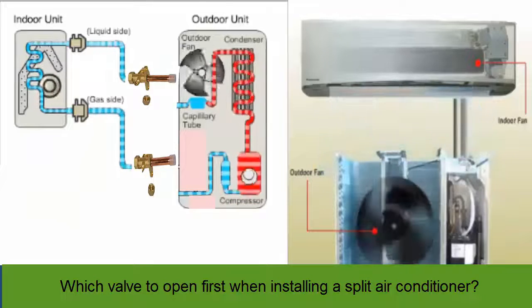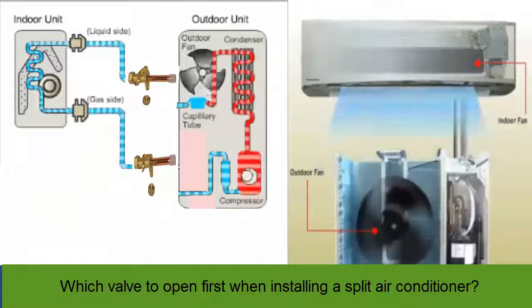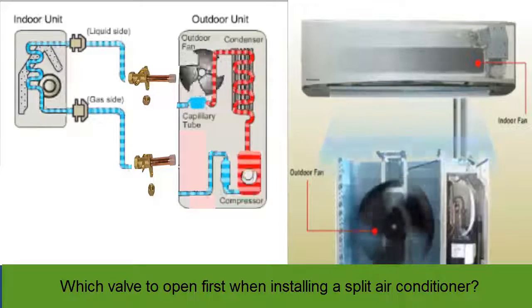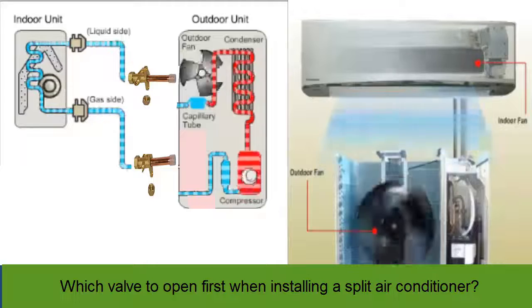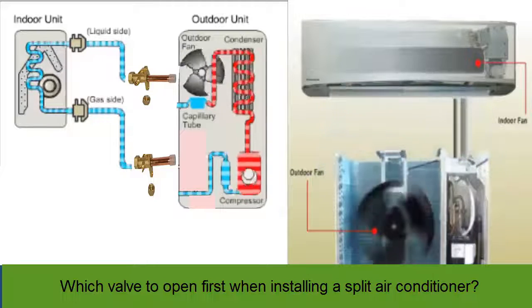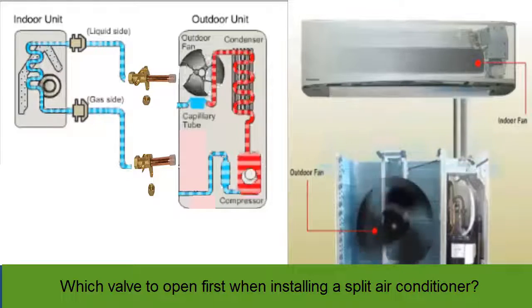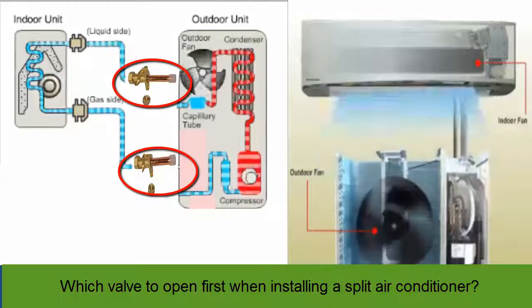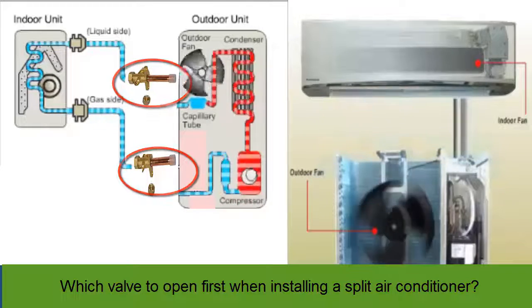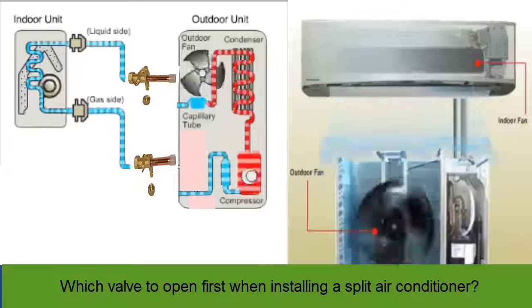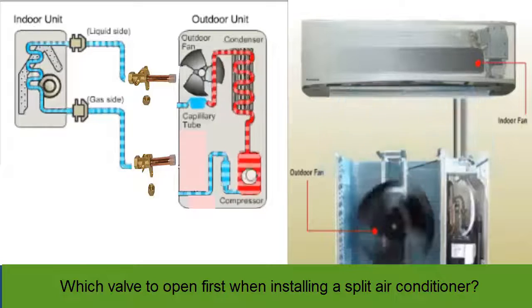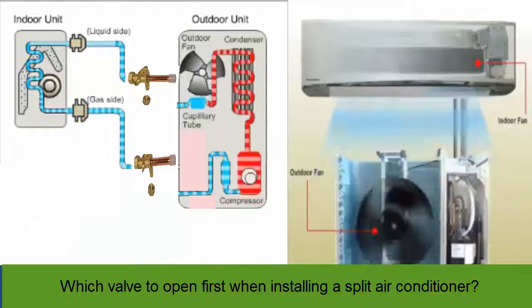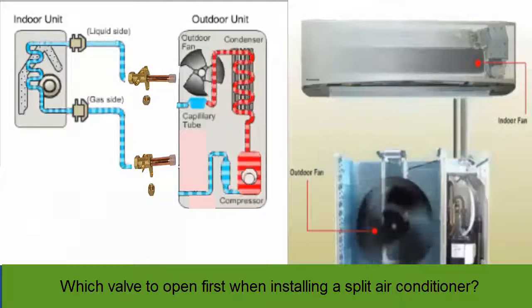Today we present which valve to open first when installing a split air conditioner. A split system has two valves located on the outdoor unit or condenser. Since the factory equipment has all the refrigerant gas stored in the condenser unit, opening these valves with the pipes connected to the indoor unit allows the gas to reach the entire system.